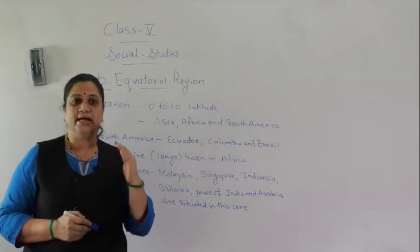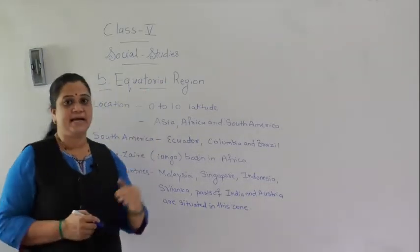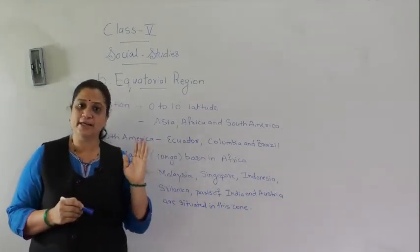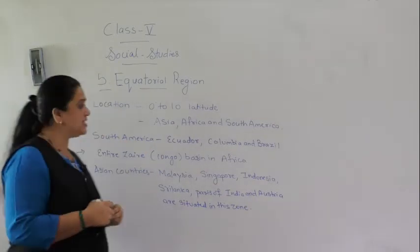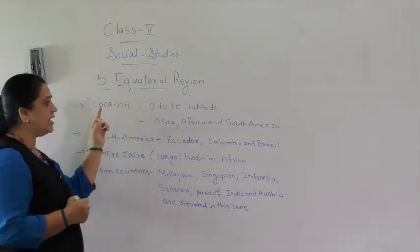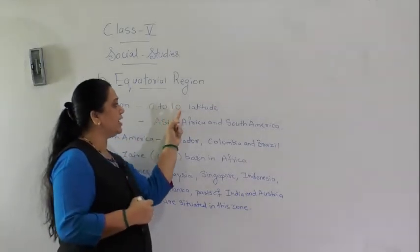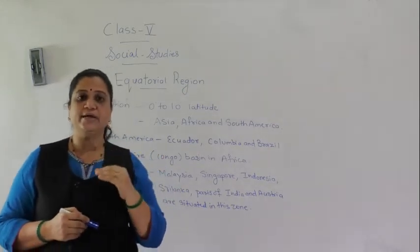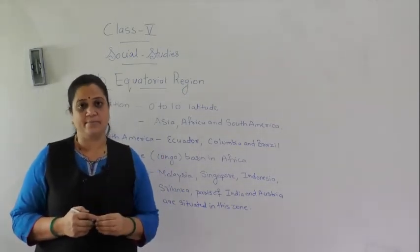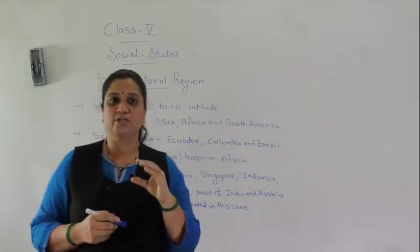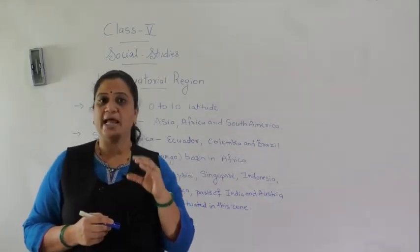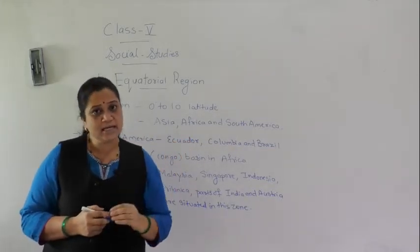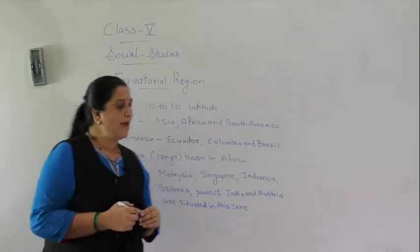The name of the lesson itself tells us that we are going to study about the region which lies near the torrid zone. The equatorial forest region lies between 0 degrees to 10 degrees latitude in the north and 0 degrees to 10 degrees latitude in the southern hemisphere. This is the area near the equator, which is the torrid zone that receives the direct rays of the sun.